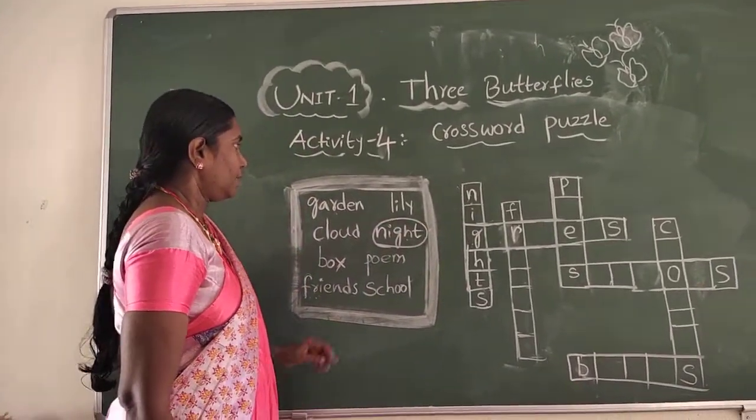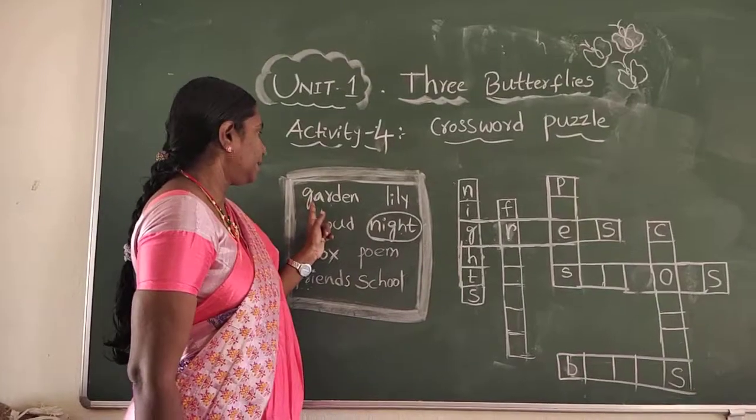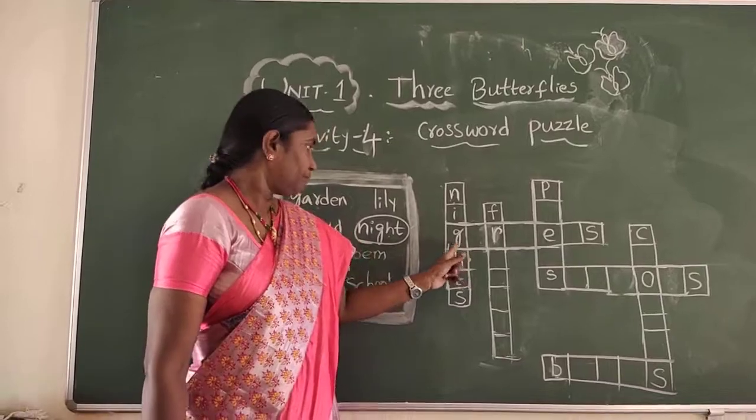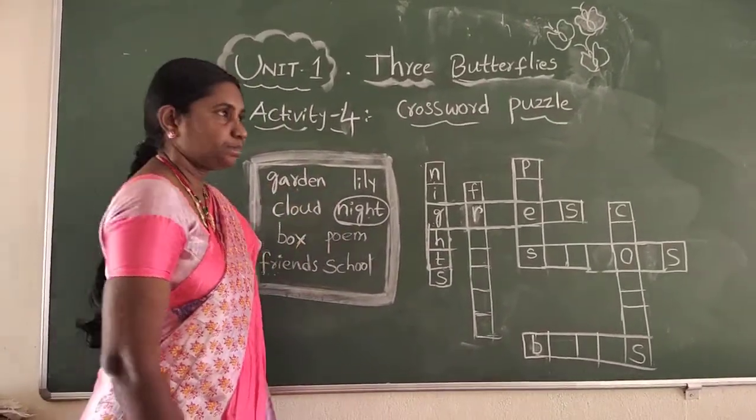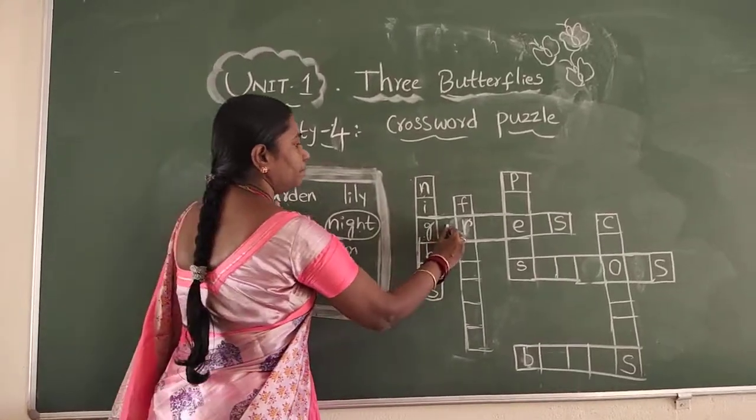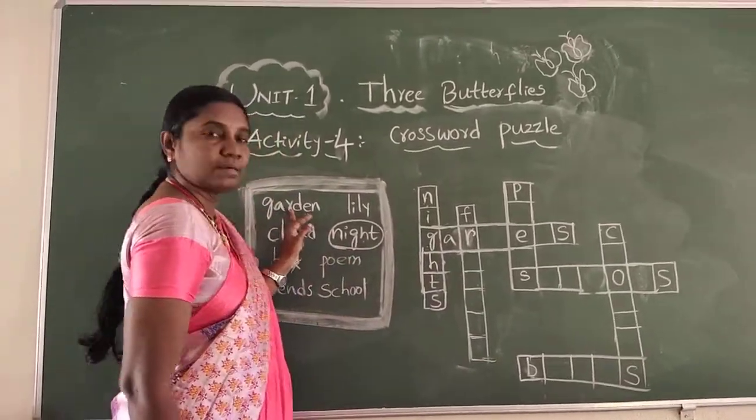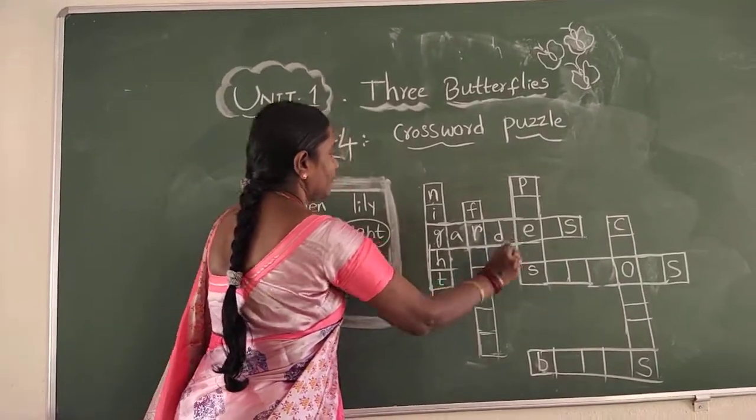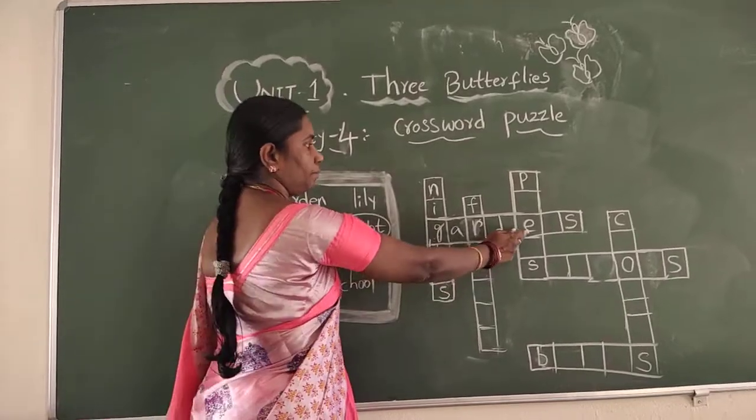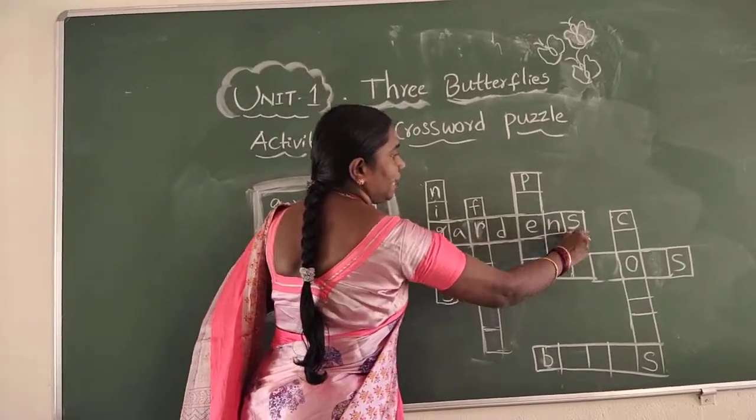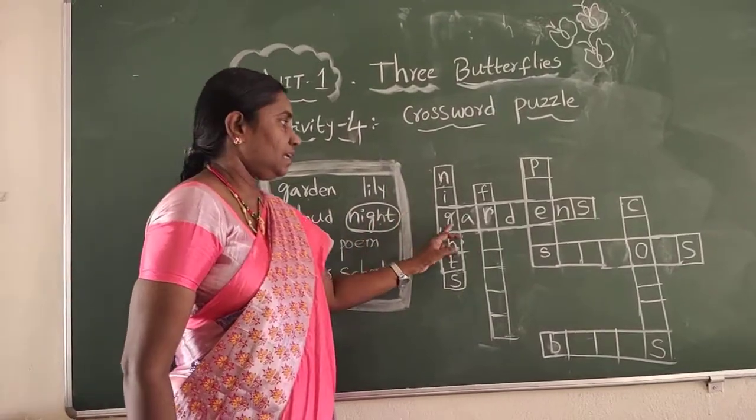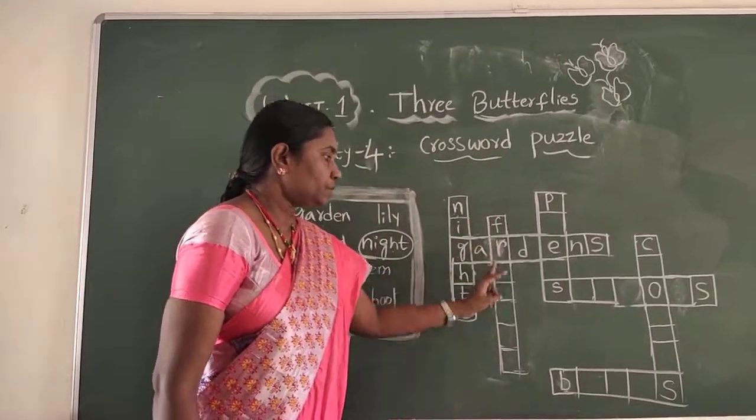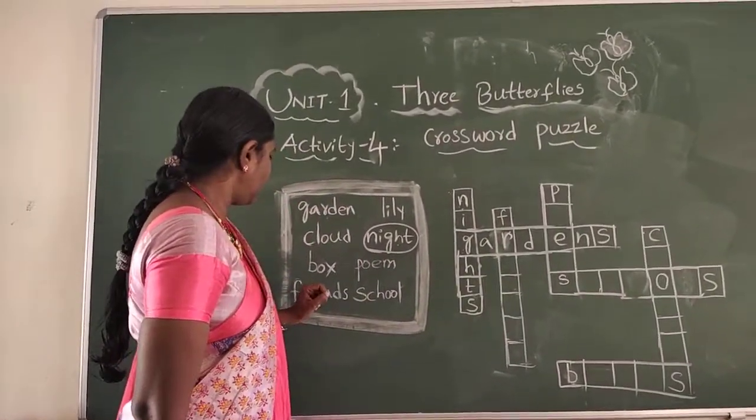This word we have coming to. And coming to next word, Garden. G-A-R-D-E-N. First letter is G. And here is G. So this is Garden. G. Next letter is A. And next letter is R. R already we have here. And next letter is D. And next letter is E. And next S. Garden. G-A-R-D-E-N-S, Gardens.